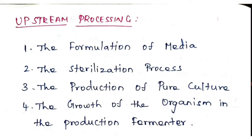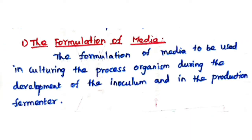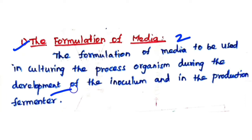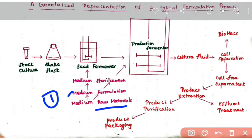The first step is the formulation of media. Media provides essential nutrients and minerals to support the growth of the organism. We formulate media for two purposes: one is for inoculum development and another is for production media, that is media for the production fermenter. You formulate two types of media from raw materials.